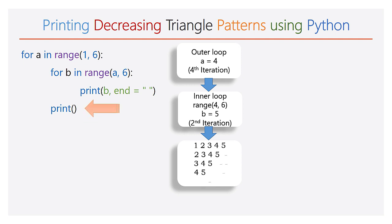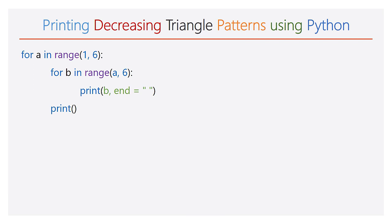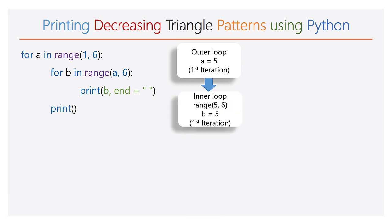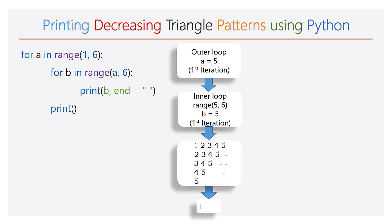The empty print function is executed and the cursor will take the new line. Again the execution goes to the first line. Now the value of a will be 5. The range of b is 5 to 6. The inner for loop will iterate only one time and it will print the number 5. After completing the inner for loop, the empty print function is executed and the cursor will take the new line. Hence you are going to get the output as expected.